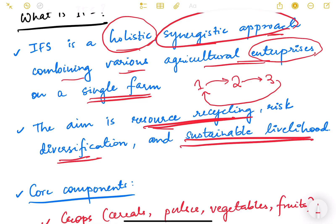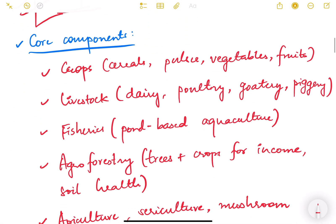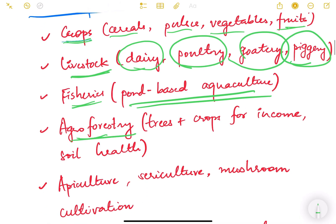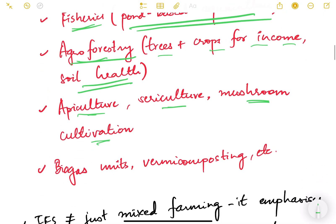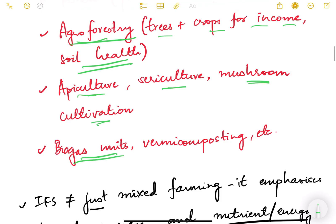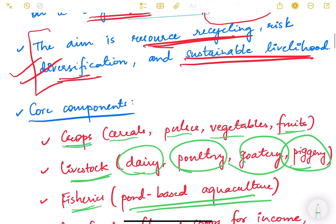What are the core components of IFS? First is crops - cereals, pulses, vegetables, fruits. Second is livestock farming - dairy, poultry, etc. Fisheries is also included, pond-based aquaculture. Agroforestry - trees plus crops for income and soil health. Then apiculture, sericulture, mushroom cultivation, biogas units, vermicomposting. So many different things can be done in one place.